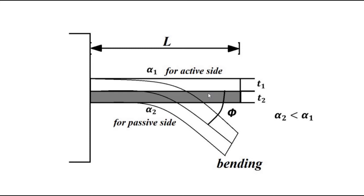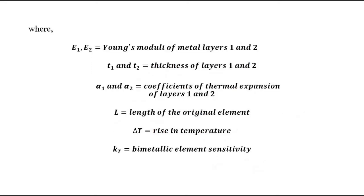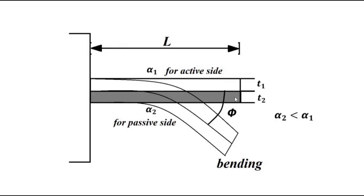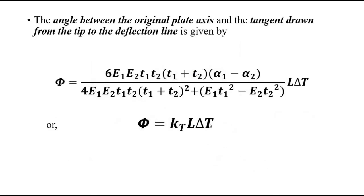Young's modulus is the ratio between applied stress and the resultant strain produced. Here, E1 and E2 are the Young's modulus for layers one and two; T1 and T2 are the thicknesses of the two metal strips; alpha 1 and alpha 2 are the coefficients of linear expansion for metal 1 and metal 2; capital L is the original length of the combined two-metal piece; and delta T is the temperature change — the difference between final and initial temperature.